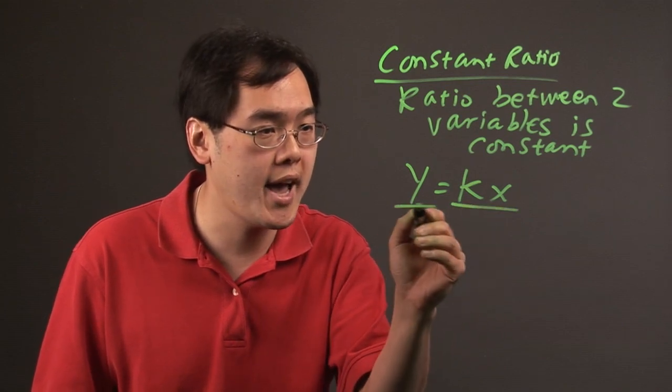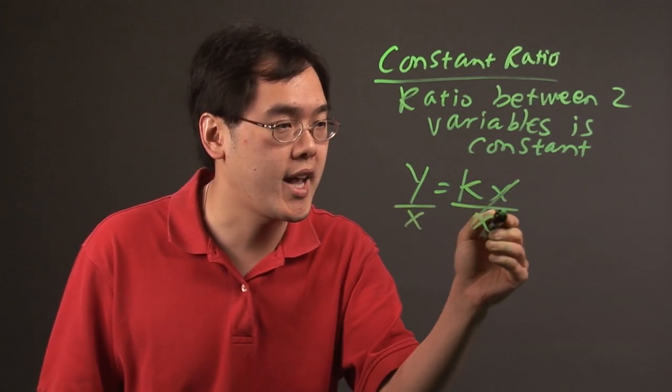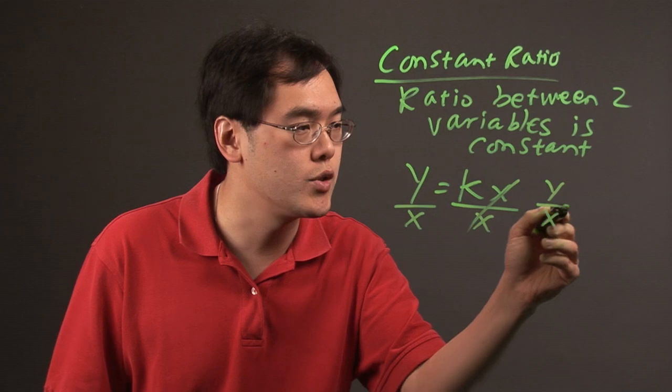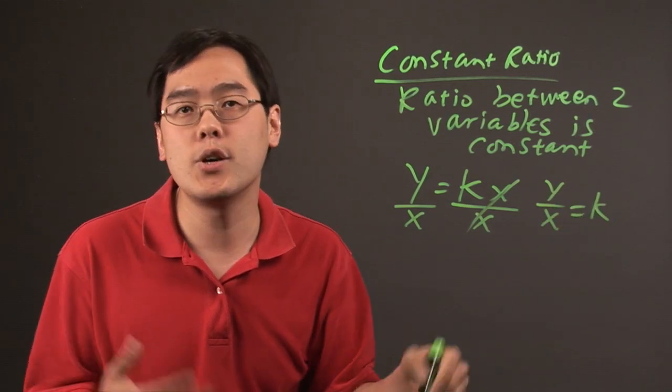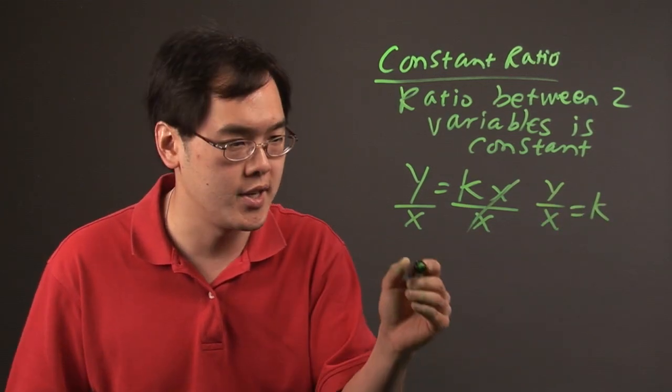For example, if you divide both sides by x, the x's cancel, and you have y over x equals that constant k. If you want to use a specific number as an illustration,